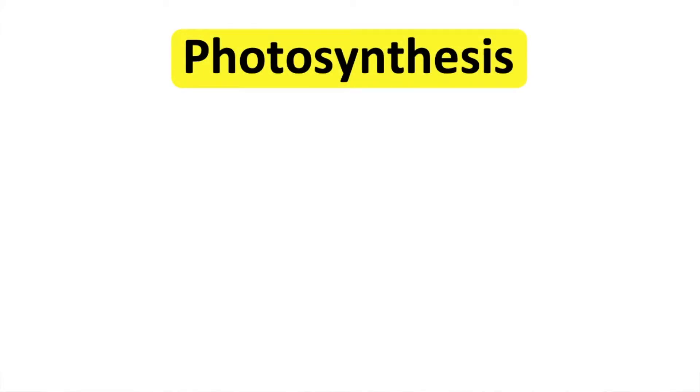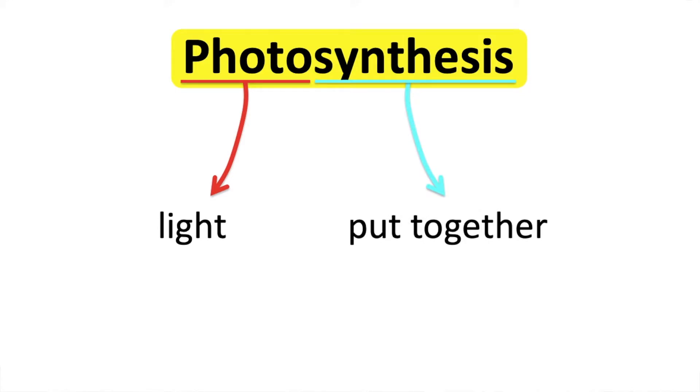Photosynthesis is a process that takes place inside a plant. It's when plants use light to make food. An easy way to remember this is photo means light and synthesis means to put something together.